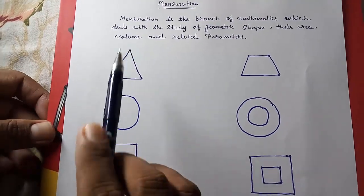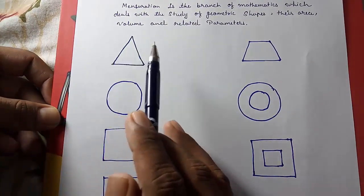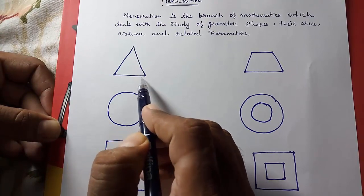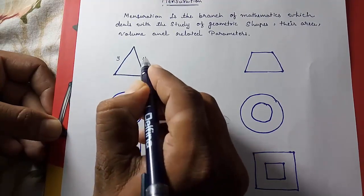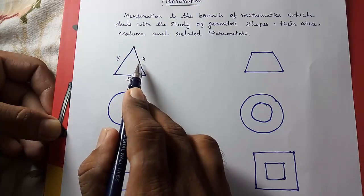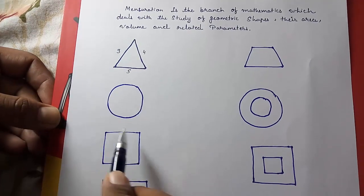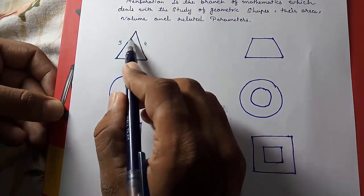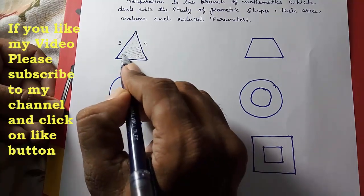Look here. First I am going to tell you the name of these two dimensional figures and how we can find the perimeter and area of each figure. First you should know what perimeter means — perimeter means the length of the outer boundary of any figure. Suppose this is 3 cm, this is 4 cm and this is 5 cm. So the perimeter of this figure will be the addition of all these: 3 + 4 = 7 + 5 = 12, so 12 will be the perimeter. Perimeter means the outer boundary, and area means the inner part — you can see I am shading it lightly so that you can see this is the area.